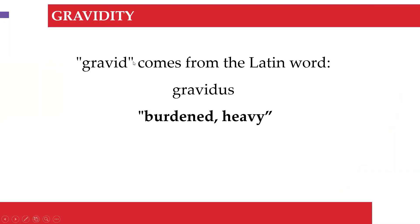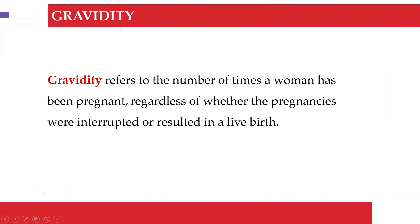Gravidity comes from the Latin word 'gravidus,' meaning burden or heavy. It was used to refer to pregnant animals, and the term stuck — even pregnant humans came to be termed as gravid. Gravidity by definition refers to the number of times a woman has been pregnant, regardless of whether the pregnancies were interrupted or the outcome. Whether they had a live birth or not, provided a woman became pregnant, that is counted as a gravidity.